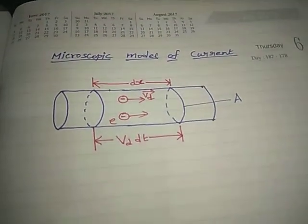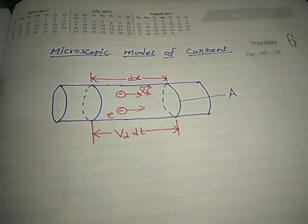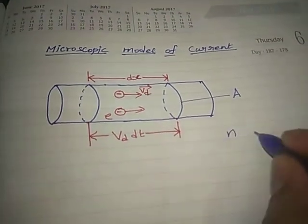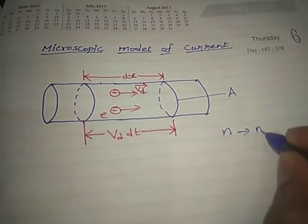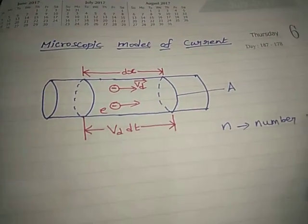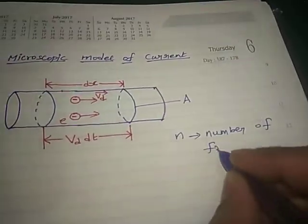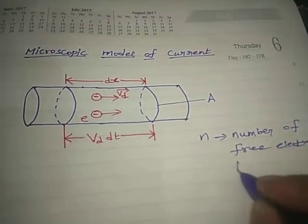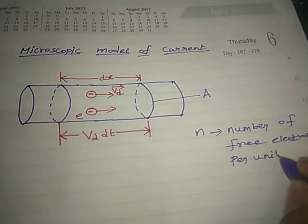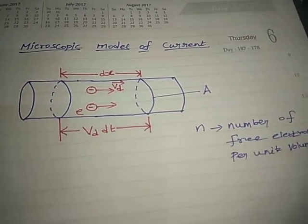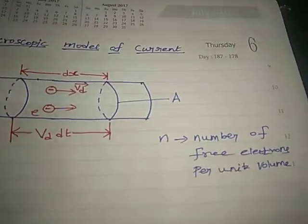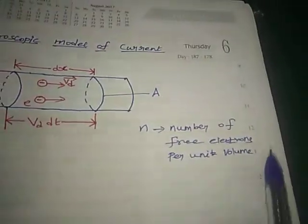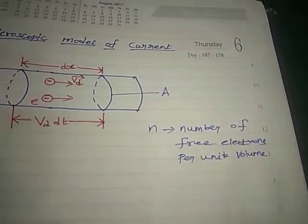Let n be the number of free electrons per unit volume. One unit volume is 1 meter cube. So n gives the number of free electrons available per unit volume in the conductor.